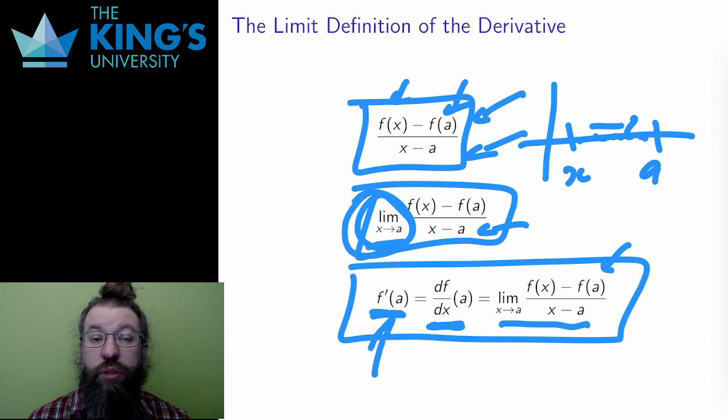The first is called Newton's notation, and the second is called Leibniz notation. I will use both, and both are acceptable in this course.